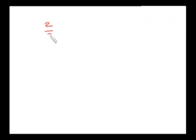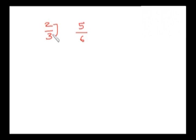Suppose I am having 2 by 3 and 5 by 6. Now friends, the very first step: if the fraction looks like smaller numbers are there, then you just see the difference between numerator and denominator. Here the difference between numerator and denominator is 1, and here also the difference between numerator and denominator is 1.